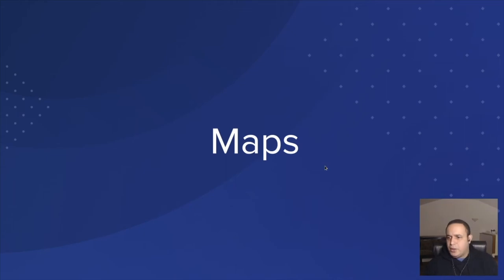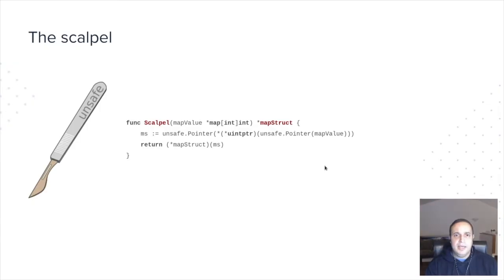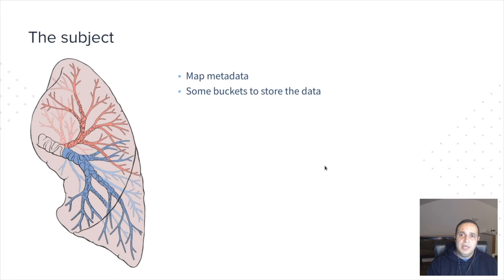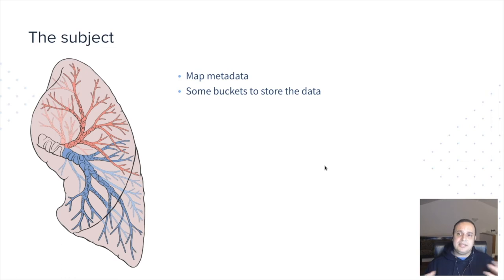Okay, let's talk about maps. For the maps, we have the scalpel — it's going to read the memory at runtime, store that in a struct. Then I'm going to use my microscope to print that struct information. The subject in this case is the map, which is just the map metadata and a set of buckets stored in the data.